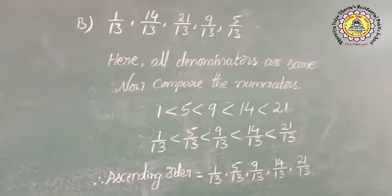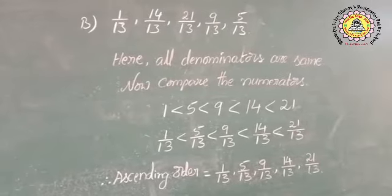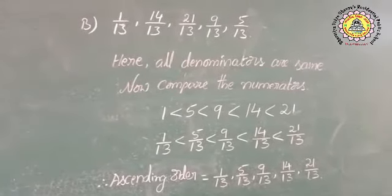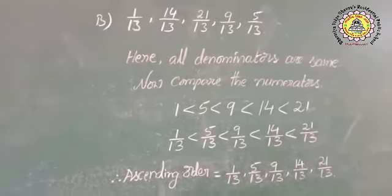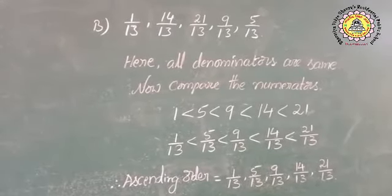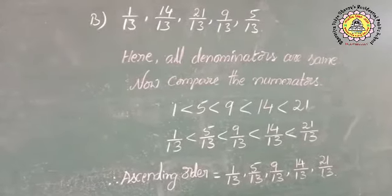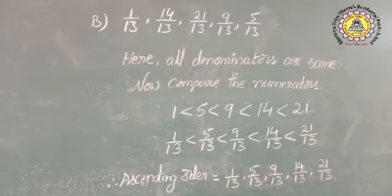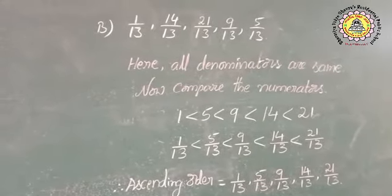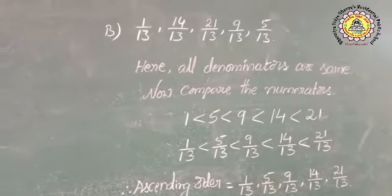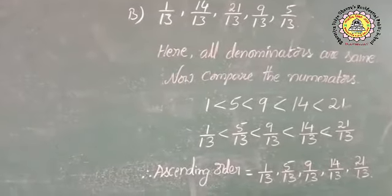Now let us know about the second sum. The fractions are 1 by 13, 14 by 13, 21 by 13, 9 by 13, and 5 by 13. For these fractions, we have to find ascending order and descending order. Like the previous sum, we follow the same procedure. All denominators are 13 — all are the same. Now compare the numerators. The numerators are 1, 14, 21, 9, and 5. We are writing ascending order, so we compare from smallest to biggest: 1 less than 5 less than 9 less than 14 less than 21. If 1 is less than 5, then 1 by 13 is less than 5 by 13.